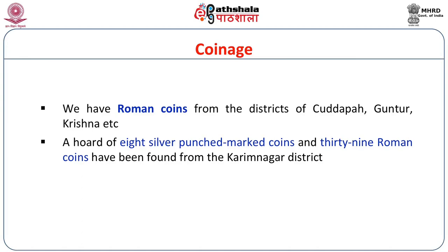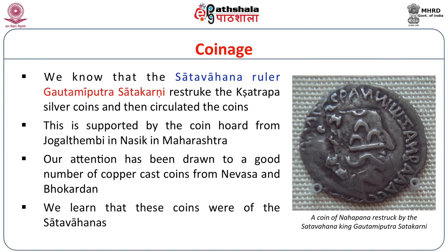The Satavahana ruler Gautamiputra Satakarni re-struck the Kshatrapa silver coins and then circulated them. These coins have been found from Jogalthambi. Gautamiputra is well known to have defeated the Kshatrapa ruler Nahapana, and the coins they had used were re-struck by Gautamiputra Satakarni to facilitate trading exchanges during his time. In other words, Gautamiputra Satakarni reused those coins with his symbols and authentication so that people could use them in day-to-day exchanges. This is supported by the coin hoard from Jogalthambi in Nashik, Maharashtra.